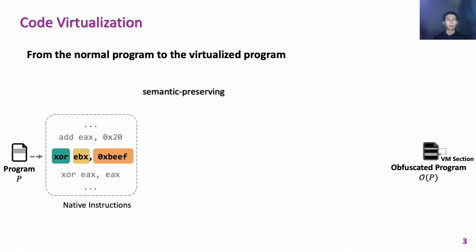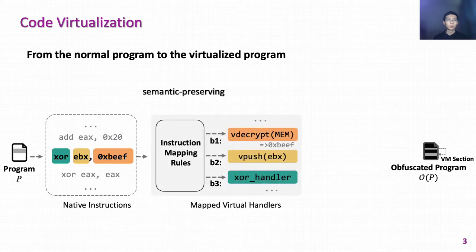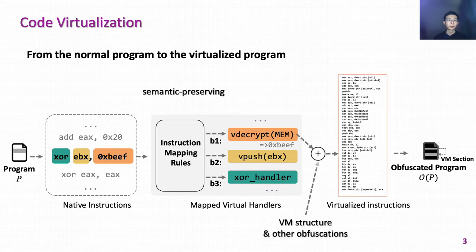Here is an example of how a normal program is transformed into a virtualized program. Assuming the native instruction to be virtualized is XREPX 0xbeef, according to the internal mapping rules, the obfuscator will transform the native instruction to corresponding virtual handlers. For example, it will use the v-decrypt-mem handler to recover the immediate 0xbeef operand at runtime. Then it combines the virtual handlers with VM structure and other functions, such as junk instructions, to generate virtualized instructions.